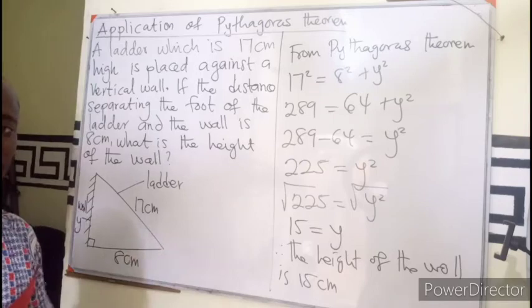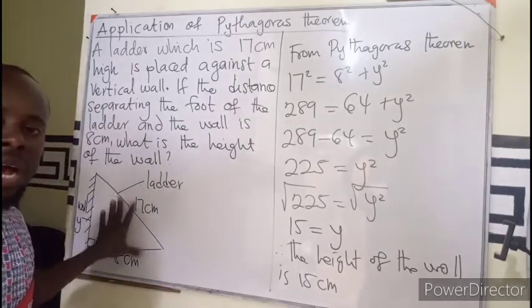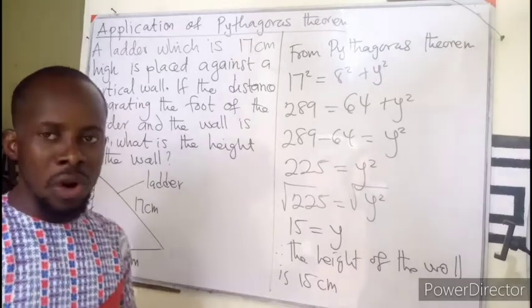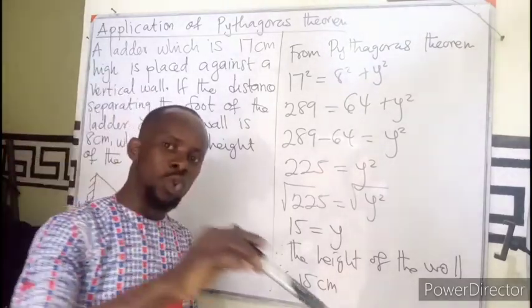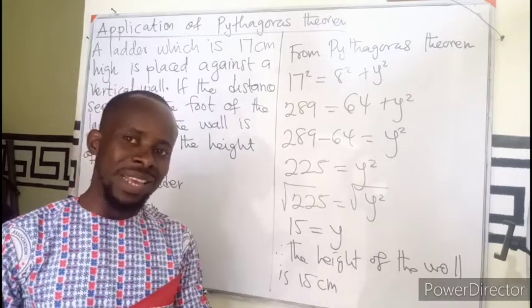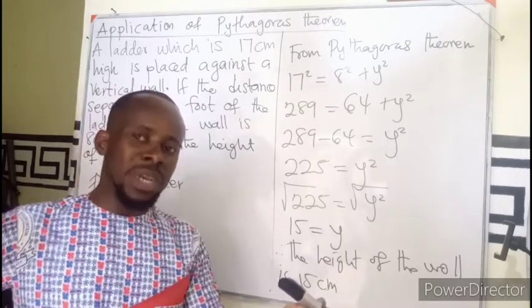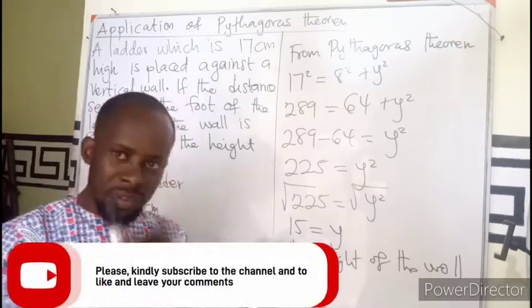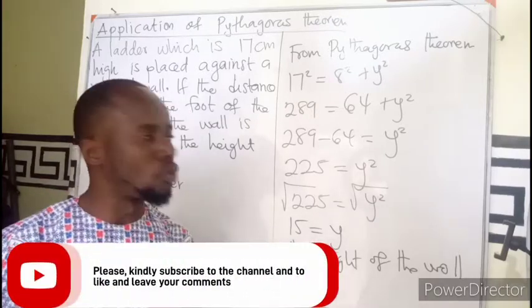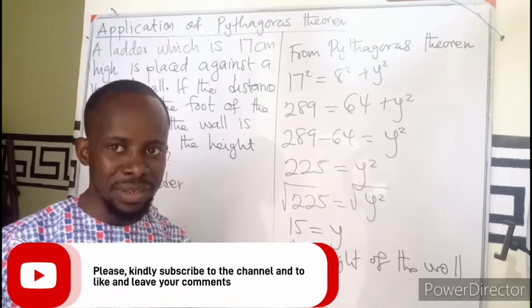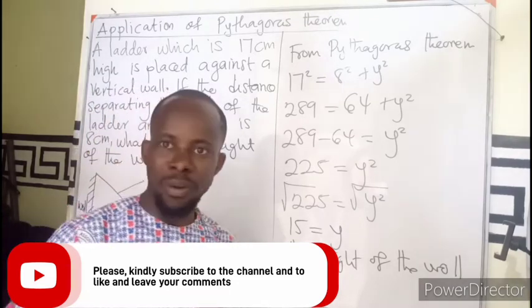So this is how we can apply the principle of Pythagoras theorem, either on a wall or when a stick is placed into a rectangular box. You know when a stick is placed into a rectangular box, creating a diagonal, it will create a right angle triangle. Still Pythagoras theorem can be used to solve those kinds of questions. I believe we have learned something. Thank you for watching.